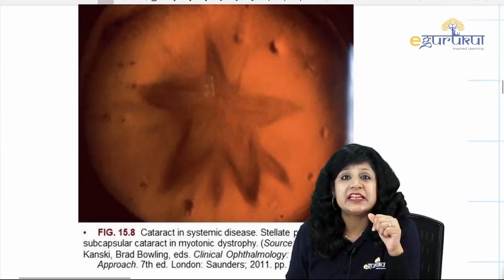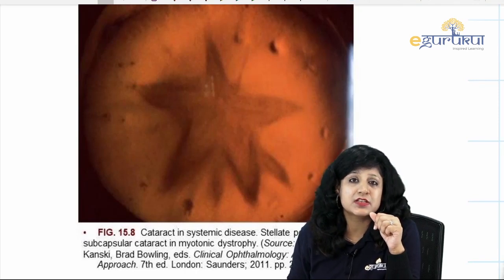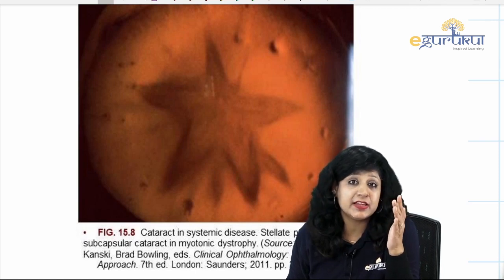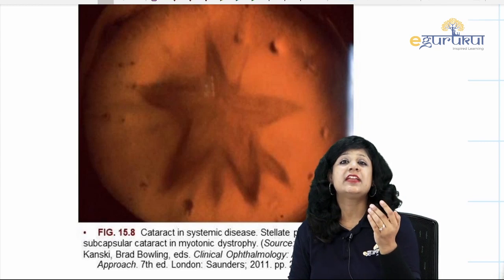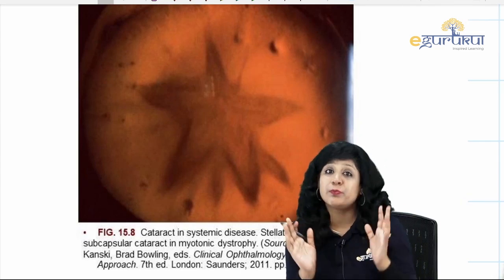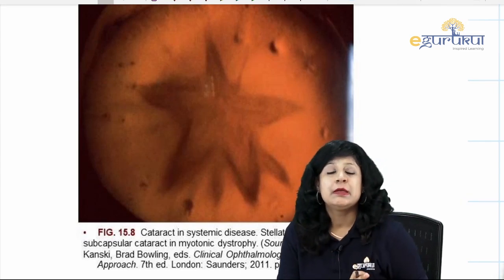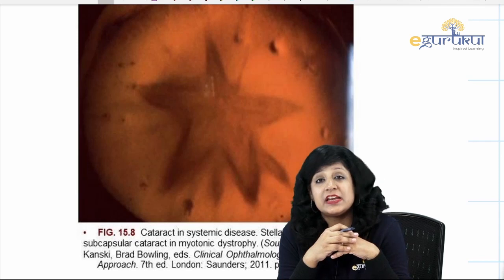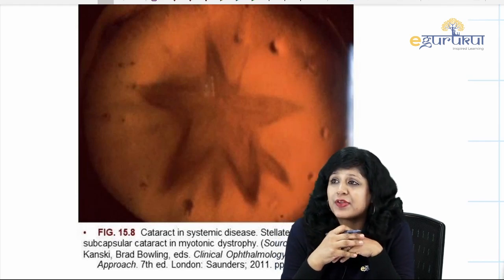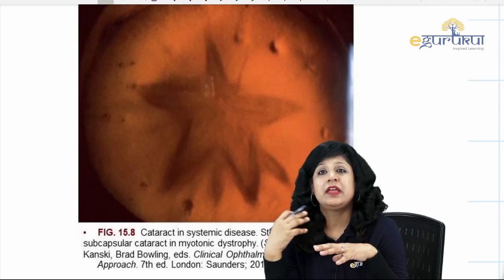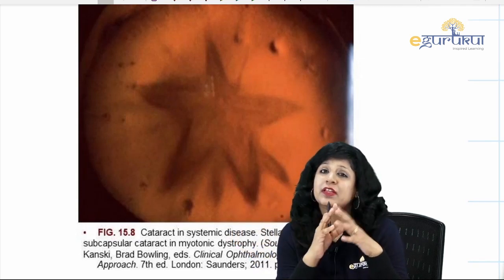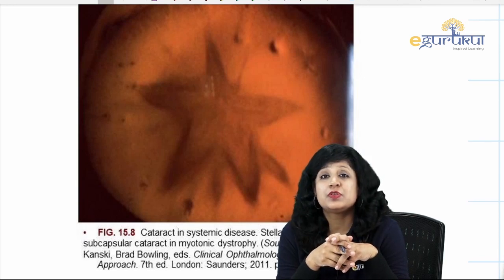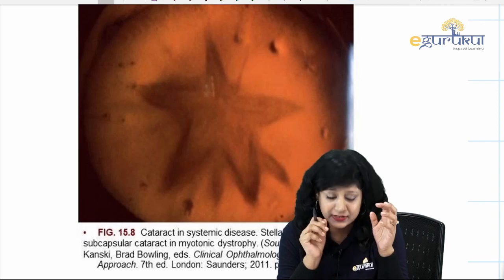The prognosis is good after surgery. This is the stellate posterior subcapsular cataract in cases of myotonic dystrophy. It looks like a rosette cataract also, so it is very important to see the image and read the question both. If the appearance is related to trauma, the answer is rosette cataract; if it is related to myotonic dystrophy, the answer is Christmas tree cataract. Image-based questions require you to see both before coming to the final diagnosis.